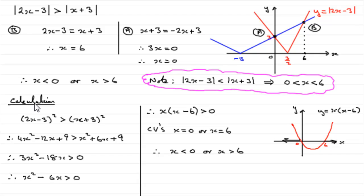In the next tutorial, I want to extend this idea to cases where we've got a function of x inside one mod, and a function of x on the other side but not in a mod. It's handled slightly differently, so I hope you'll have a look at that.